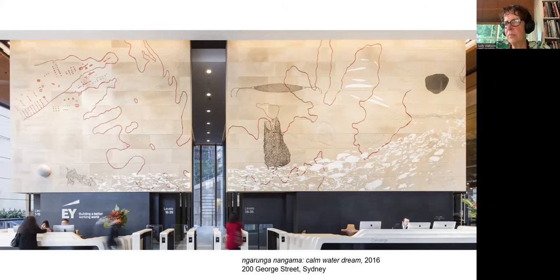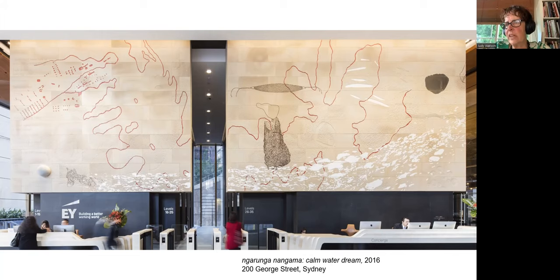This is other public artwork talking about Sydney. On the left you can see the Tank Stream going down to Sydney Harbour — etched into sandstone. Narunga Nangama — calm water dream — Narunga Nangama is in the local Aboriginal Sydney language. This is a video called 'The Names of Places,' talking about some of the places that Aboriginal people have been massacred around Australia.